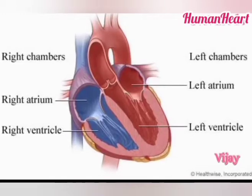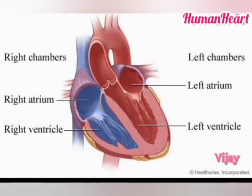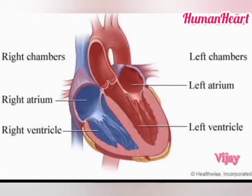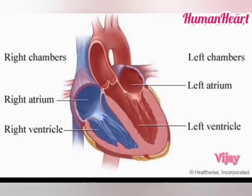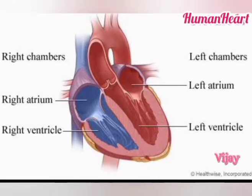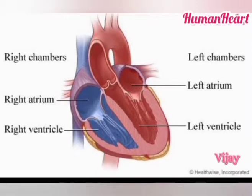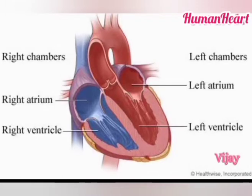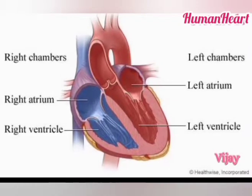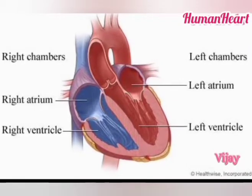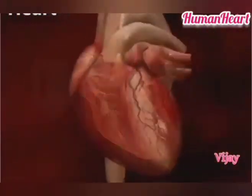The human heart contains four chambers. There are two thin upper chambers and two thick lower chambers. The thin upper chambers are called auricles, and the two thick lower chambers are called ventricles. The heart is covered by the pericardium.